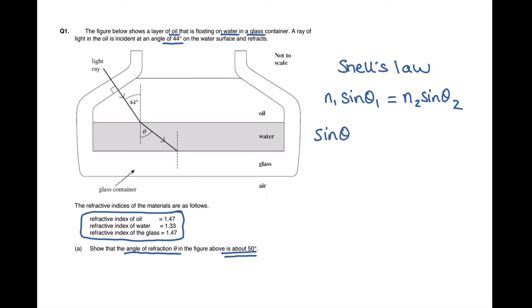So we are trying to find theta 2, the angle of refraction. So we need to rearrange this equation. Sine theta 2 equals N1 sine theta 1 over N2 and then we need to substitute in our numbers. So medium 1 is the oil and medium 2 is the water. So refractive index of oil is 1.47 times sine 44 divided by the refractive index of the water which is 1.33.